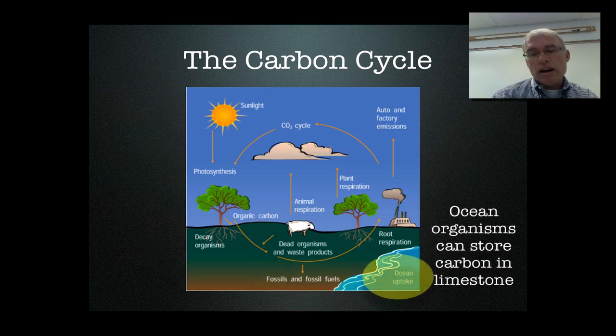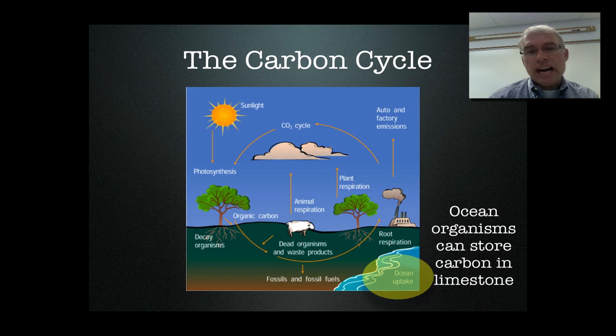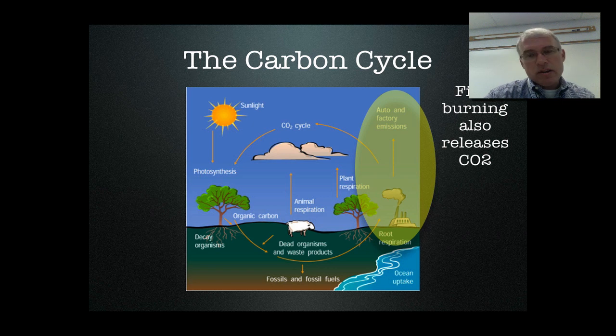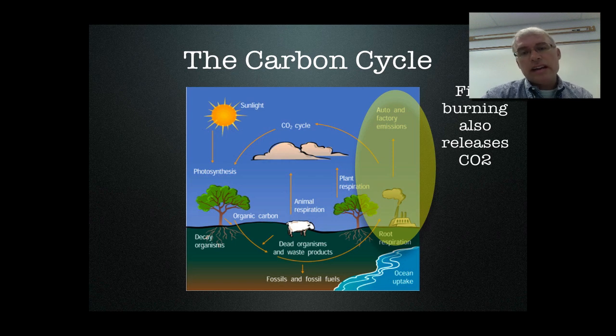The oceans also have a way of getting carbon out of the atmosphere by building it into limestone. Limestone is a mineral made by organisms in the ocean and by ocean water. A good example would be the stony material in oyster shells, which locks away carbon and keeps it out of the atmosphere. Fires, like in factories, car engines, or forest fires, also release carbon dioxide into the atmosphere.